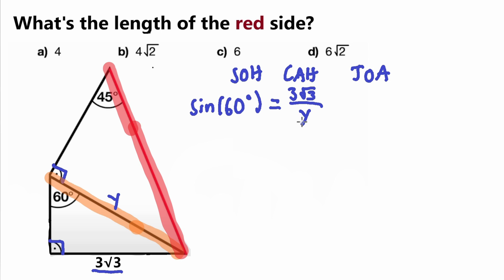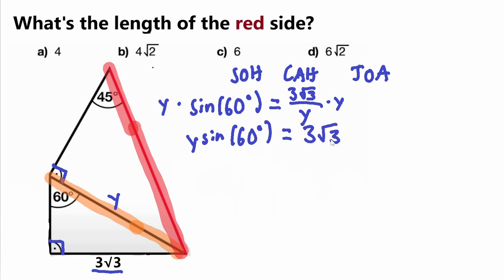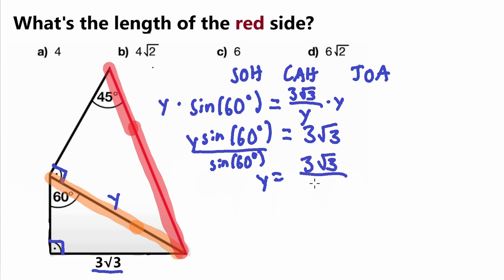To solve for y, first we get it out of the denominator by multiplying both sides by y. That gives us y × sine(60°) = 3√3. Then we divide both sides by sine(60°), so y = 3√3 / sine(60°).